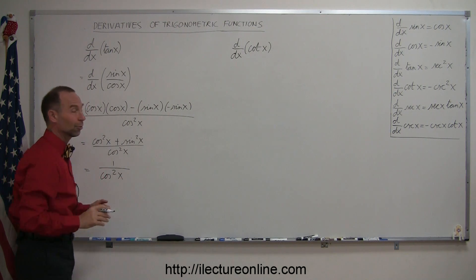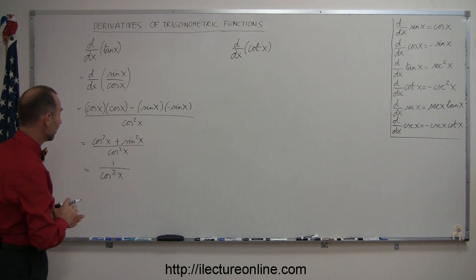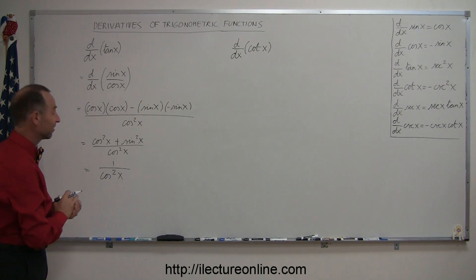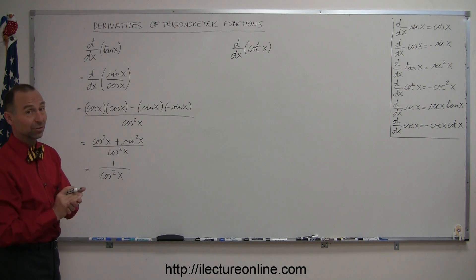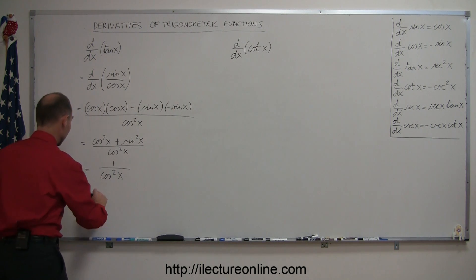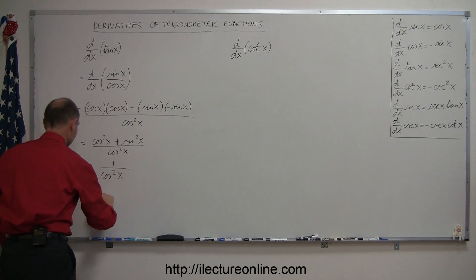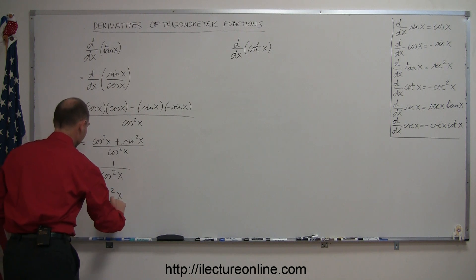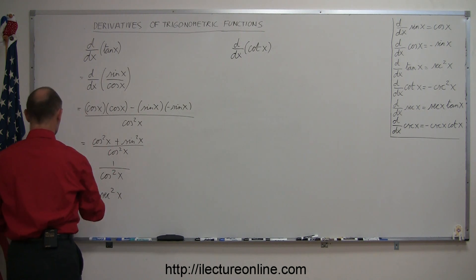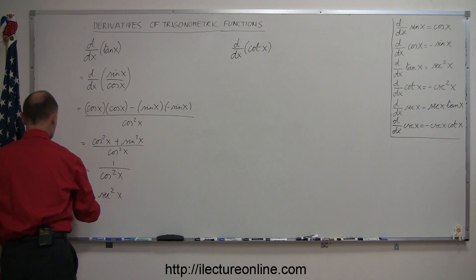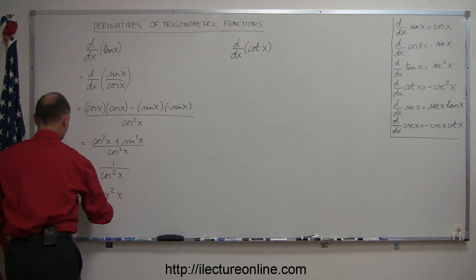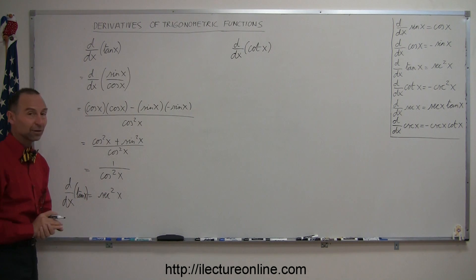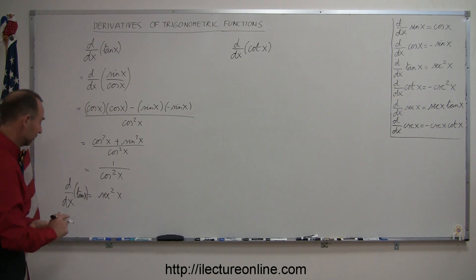We should remember that 1 over cosine is equal to the secant, so 1 over cosine squared is therefore equal to secant squared. So this is equal to secant squared of x, which means that d/dx of the tangent of x is equal to secant squared of x.